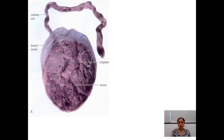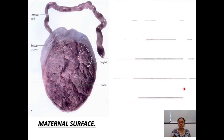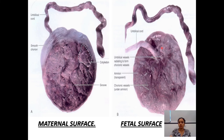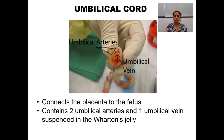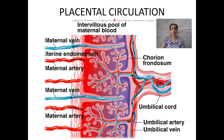This picture shows a real placenta. You can see the lobes — the cotyledons — with grooves, making the maternal surface rough. The fetal surface on the other side is smooth with chorionic vessels visible underneath the amnion. The umbilical cord contains the umbilical vessels. A cross-section of the umbilical cord shows two arteries and one vein, suspended in a gel-like material called Wharton's jelly.